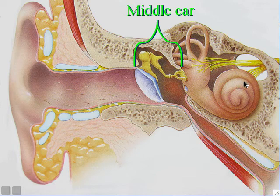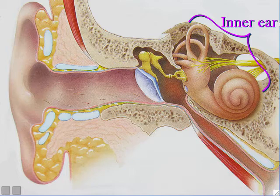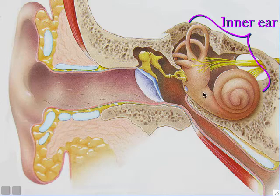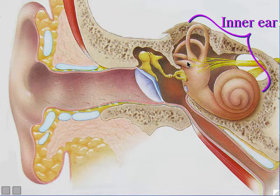Moving inward, the innermost part of the ear is called the inner ear. The inner ear sort of looks like a snail — if you've ever looked at a standard garden snail, it has a curly cue shell, and that's what that part looks like. The body of the snail sticks out of the shell, and snails have antennas that stick up off the top of their body. I always think of the inner ear as looking a bit like a snail.